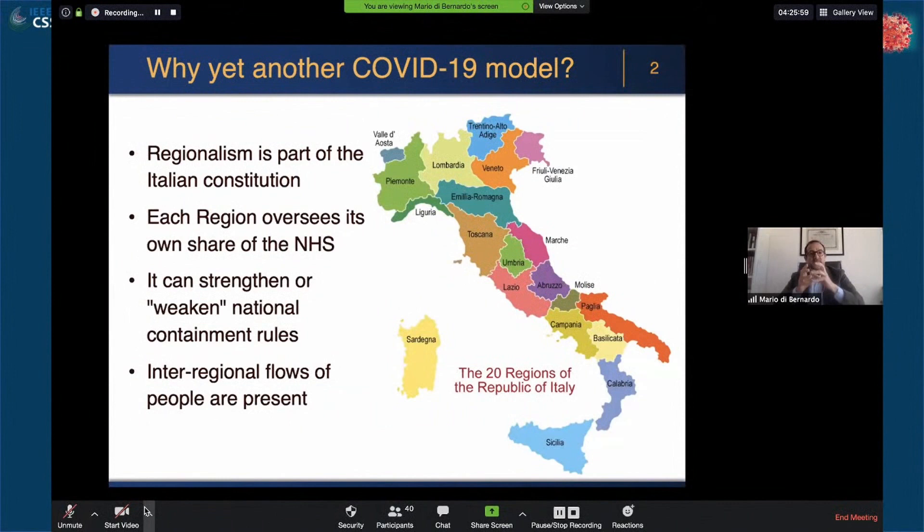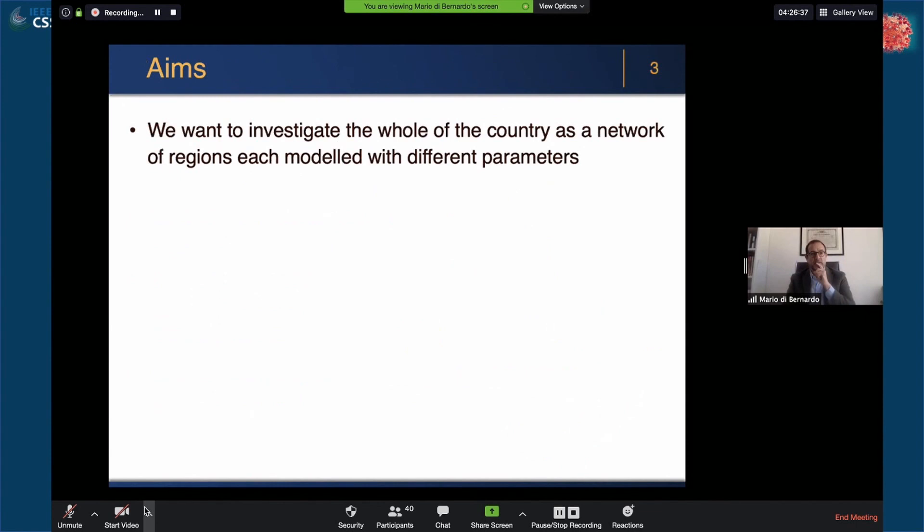In particular, this is our motivation. Regionalism is an important part of the Italian constitution. We have seen over the past few weeks that each region is in charge of its own share of the National Health Service. It can strengthen or weaken, although this is controversial, national containment rules decided by the government. And we have heard a lot about the possible effect of flows between regions.